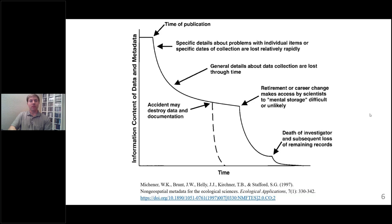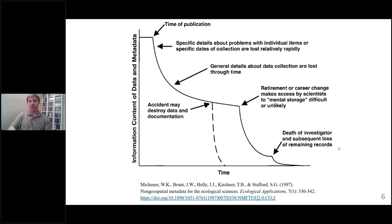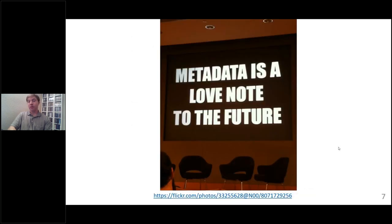This chart has specific details about problems with items, specific dates of collection. As time goes by, general details might be lost. You might have accidental destruction of data. People retire, and then you have less knowledge of what data or metadata might have meant. Obviously, we all have finite lives and careers, and at a certain point people pass away and knowledge may be totally lost. One of the roles of metadata is to push these curves out, to fill in some of these gaps and to prevent some of these losses.